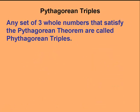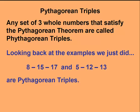Any set of three whole numbers that satisfy the Pythagorean theorem are called Pythagorean triples. In the examples we just did, when we had the sides 8 and 15, it gave us a hypotenuse of 17. All three are whole numbers, that's why this is called a Pythagorean triple. We also did the triangle with two sides of 5 and 12 having a hypotenuse of 13. I would encourage you to see if you can find other Pythagorean triples as you're using the Pythagorean theorem.